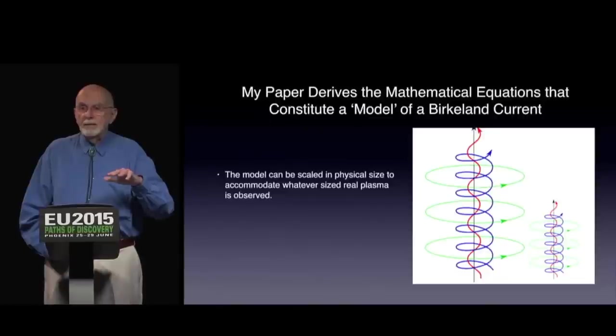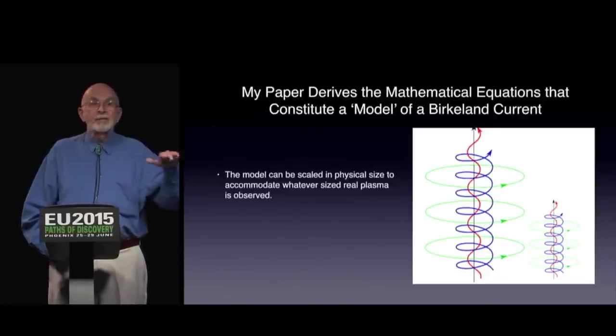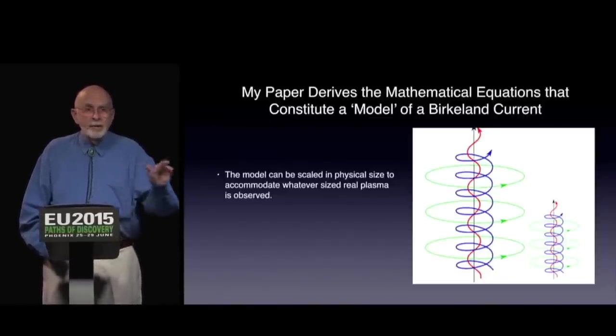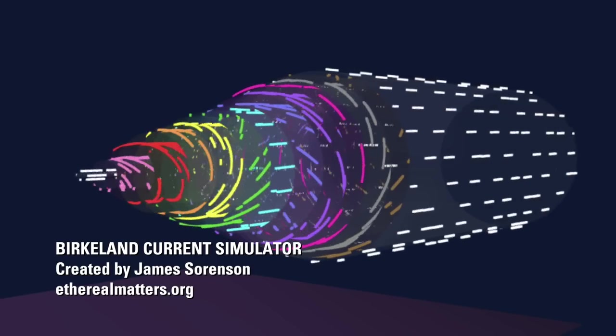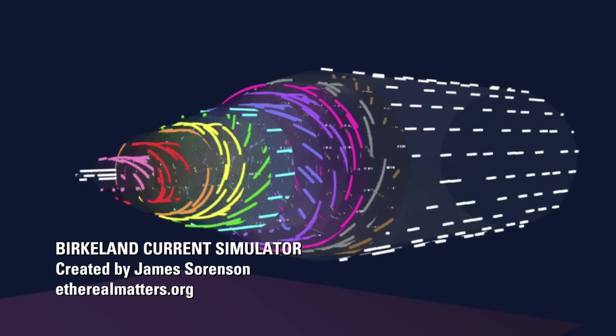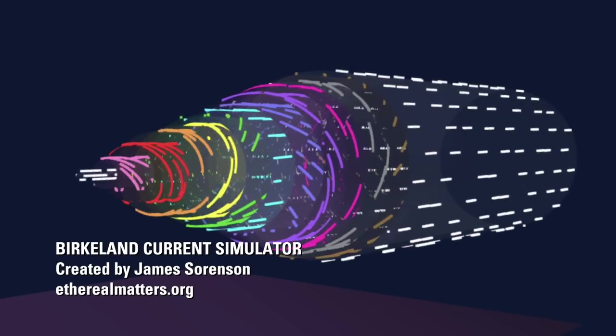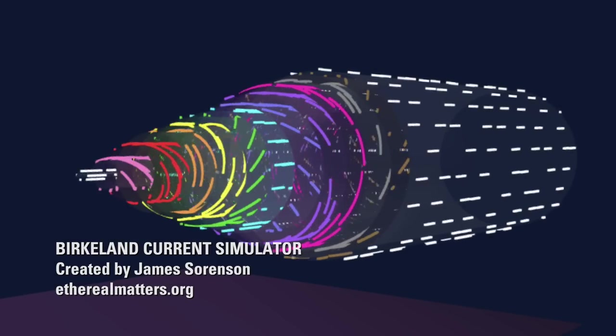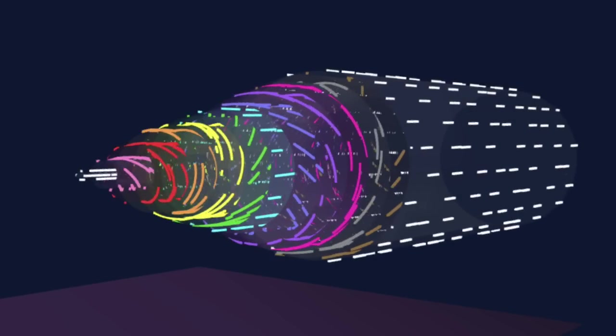I wondered if the plot of the rotation speed of the plasma in my model Birkeland current might be similar to the ones that baffled those astronomers. I set out to determine what that velocity profile might be. My model yields information about the magnetic field strength and the current density in a Birkeland current, but it doesn't directly yield any information about the velocity of the charges.